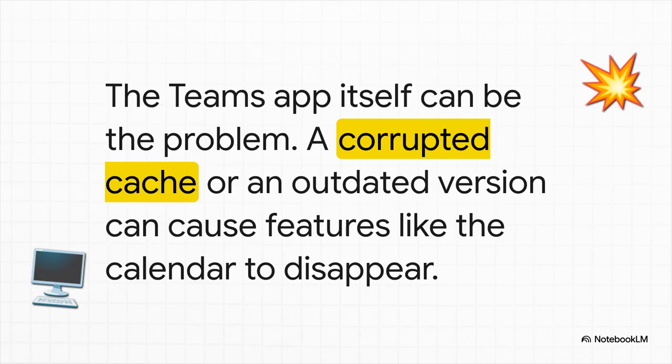And finally, culprit number three: sometimes the problem is literally just the Teams app itself. Apps store temporary files to run faster — that's called a cache. But if that cache gets corrupted, or if you're running an old, outdated version of Teams, it can cause all sorts of bizarre glitches, including making important things like the calendar just disappear.